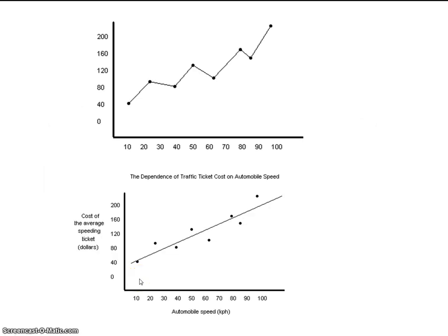So, same thing here once again. This person has connected the dots. This person has made a correct best fit line. It's an average of the data, and it's using a ruler. And this person has given us labels and units on both axes, where this person has not.